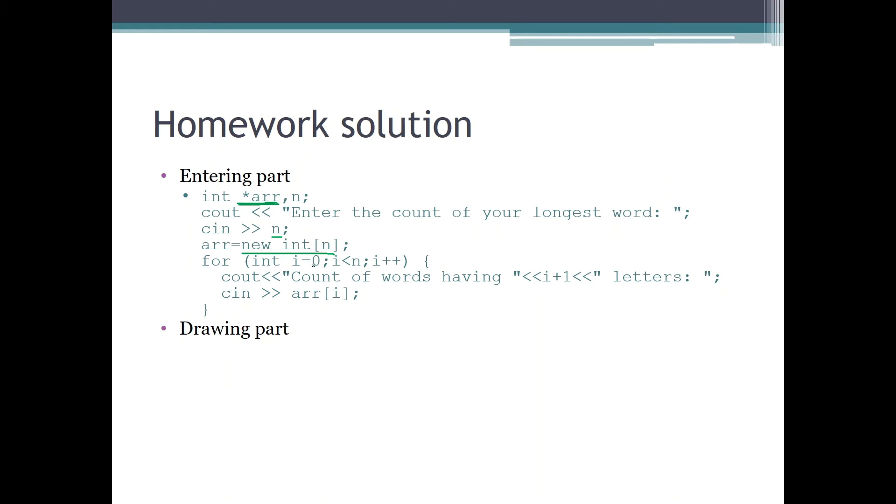Because enumeration starts with zero but word length starts with one, we have to ask the user how many words are having i plus one letters, and this information will be stored in the element number i in the array. So this little feature must be taken into account here.